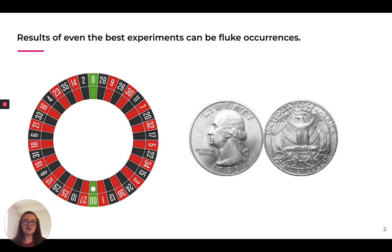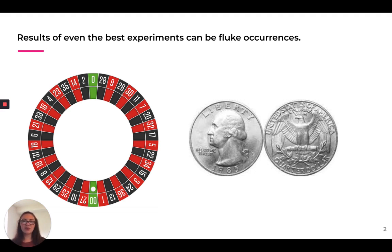To start, we're going to be running CRO tests, A/B tests, multivariate tests — all of the above. The important thing to remember is that sometimes results of these experiments happen just because of fluke occurrences. A great example is a roulette wheel: we know the odds of getting red or black are the same, but if we spin it ten times, we may get black seven times and red three times.